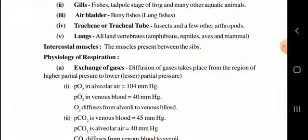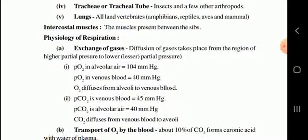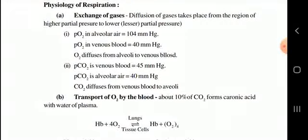Next, physiology of respiration — exchange of gases. Gases diffuse from regions of higher partial pressure to lower. The partial pressure of oxygen (pO2) in alveolar air is 104 mmHg, while pO2 in venous blood is 40 mmHg, so O2 diffuses from alveolar air to venous blood. pCO2 increases from alveolar to venous direction. In venous blood, pCO2 is higher; in alveolar air, it is lower.